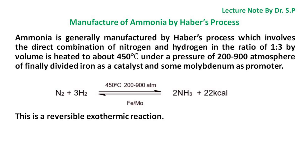Ammonia is generally manufactured by Haber's Process, which involves the direct combination of nitrogen and hydrogen in the ratio of 1:3 by volume. The mixture is heated to about 450 degrees Celsius under a pressure of 200 to 900 atmospheres, using finely divided iron as a catalyst and some molybdenum as a promoter.